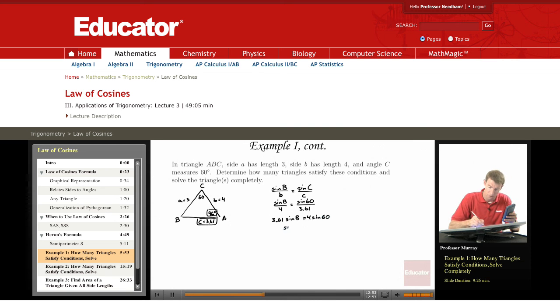And so sine of capital B, that's what we're solving for, is equal to 4 sine of 60 divided by 3.61. So let me work that out on my calculator. 4 sine of 60 divided by 3.61 is 0.96. And so B is arcsine of 0.96. And I'll work that out. That's 73 point, just about 74 degrees. Rounds to 74 degrees. So now I've figured out angle B, 74 degrees.